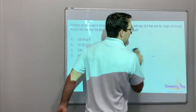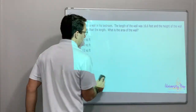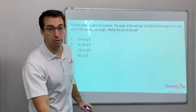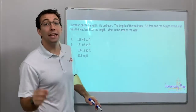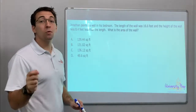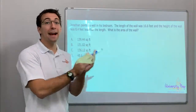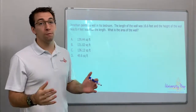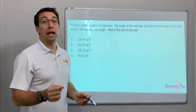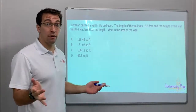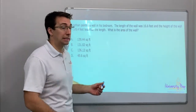Jonathan painted a wall in his bedroom. The length of the wall was 16.6 feet and the height of the wall was 8.4 feet less than the length. What's the area of the wall?